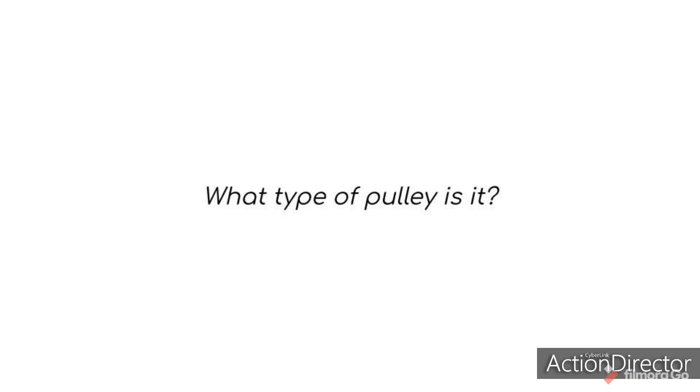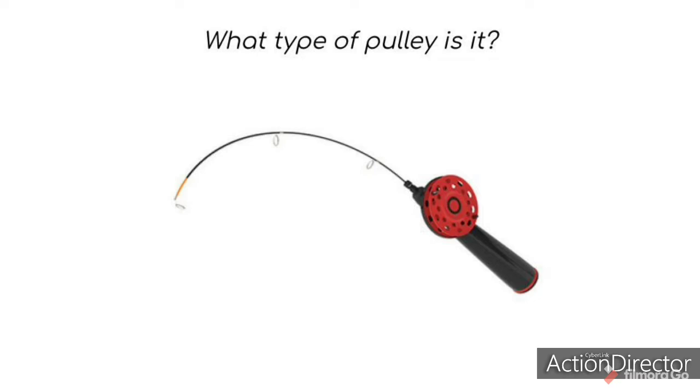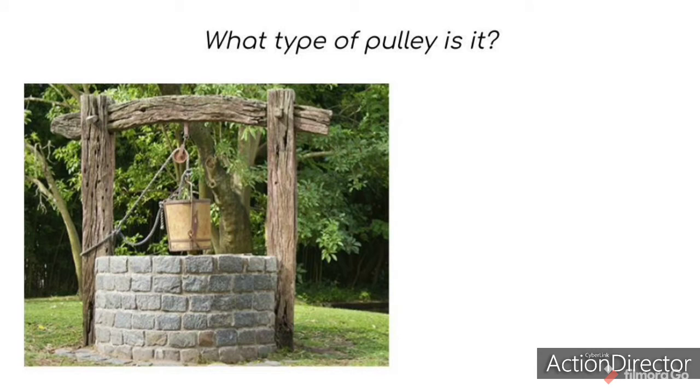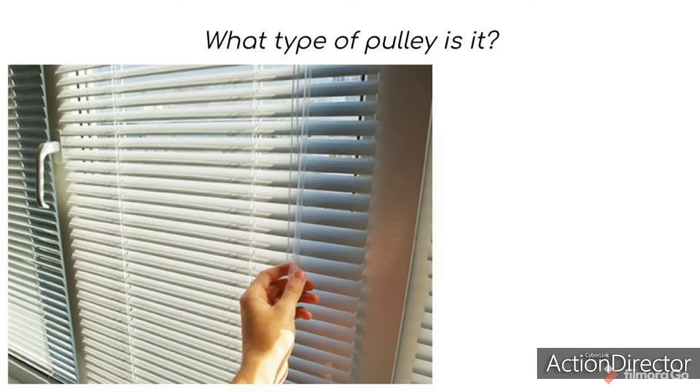Let's play a game of what type of pulley is it. What type of pulley is this fishing rod? It's a fixed pulley. What type of pulley is this crane? The crane is a compound pulley. What type of pulley is this well? The well is also a fixed pulley. And what type of pulley are these blinds? The blinds use a movable pulley.